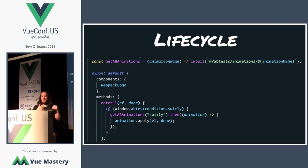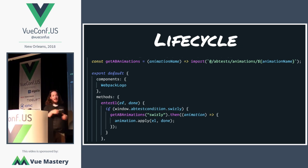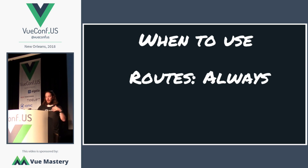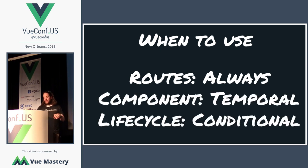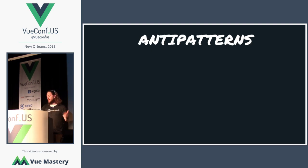There are other unique ways to use dynamic import statements — for example, A/B animations. Based on an animation name or type, or if someone hits a dropdown and changes state, you can have different animations applied to a component using dynamic code splitting. Always code split routes. Code split components when they're temporal, when their default state is not shown, when they're below the fold, when the lifecycle is conditional, or for A/B tests.